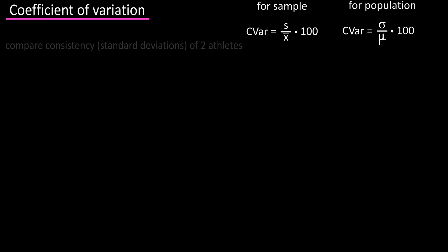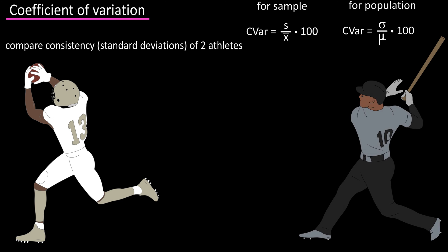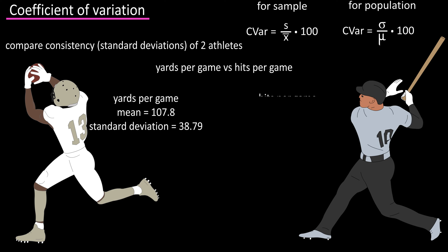Let's say you wanted to compare the consistency of two athletes for their 2019 seasons: wide receiver Michael Thomas and baseball star Johan Mankata — yards per game versus hits per game. Michael Thomas has an average of 107.8 yards per game with a standard deviation of 38.79. Mankata averaged 1.2 hits per game with a standard deviation of 0.98.